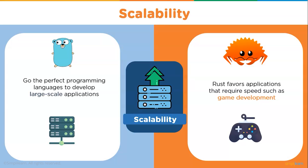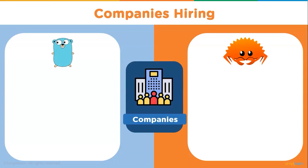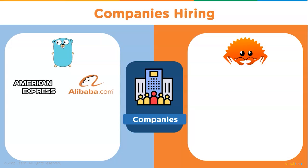Now let's see companies hiring for Golang and Rust, starting with Golang. First is American Express, an American multinational corporation primarily known for its credit cards and payment processing. Their payments and rewards platform team adopted Go in 2016, focusing mainly on microservices, transaction routing, and load balancing use cases as they needed to modernize their architecture. They also published a case study: 'American Express Uses Go for Payments and Rewards.'